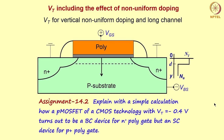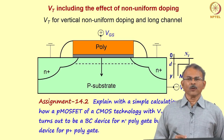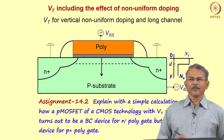Here is an assignment: explain with a simple calculation how a P-MOSFET of a CMOS technology with Vt = -0.4 V turns out to be a buried channel device for an N+ polygate, but a surface channel device for a P+ polygate. Since it is a P-type MOSFET, your substrate doping is N-type.